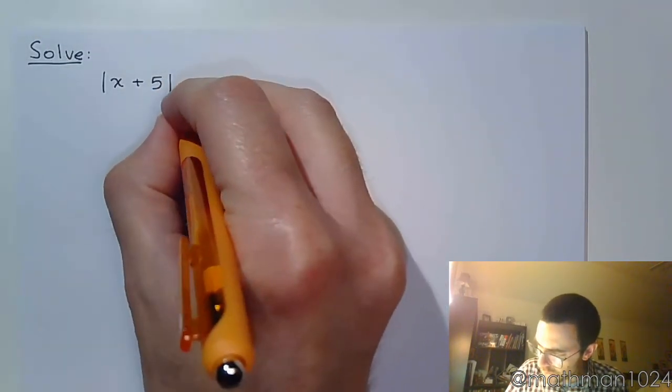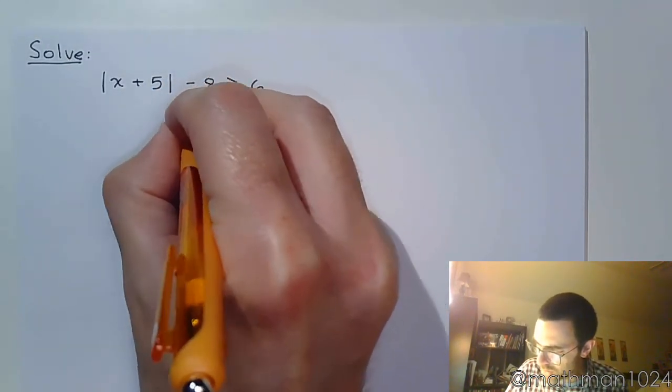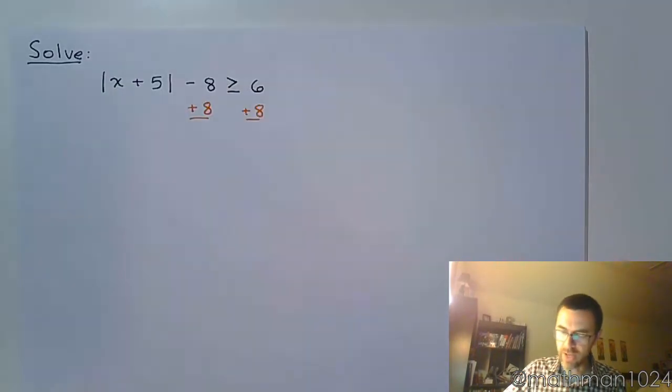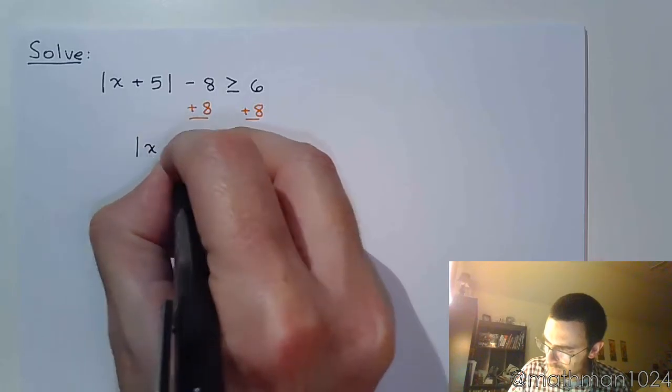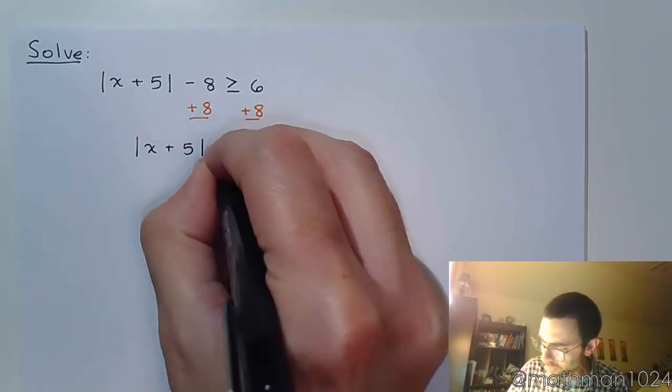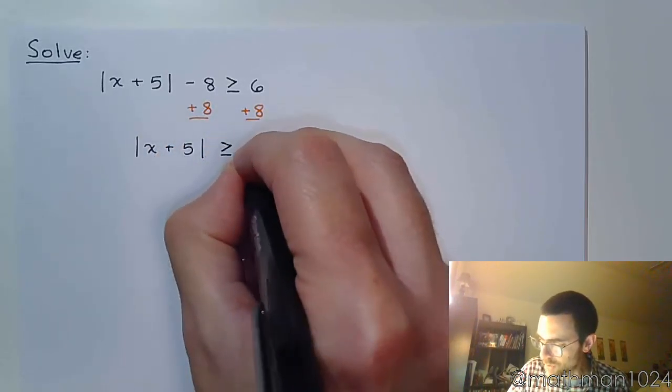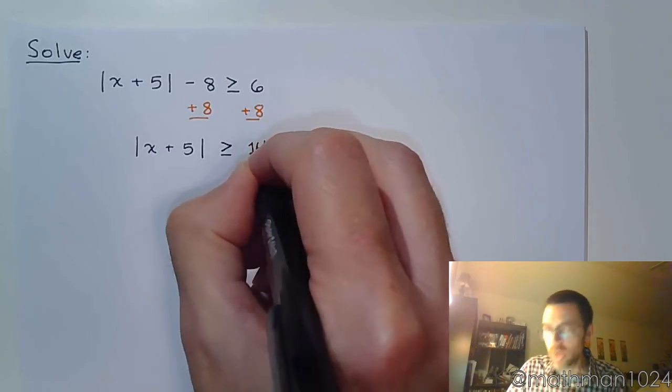Let's do that here. First thing we need to do is get the absolute value by itself, so I'm going to add 8 to both sides. I get the absolute value of x plus 5 is greater than or equal to 14.